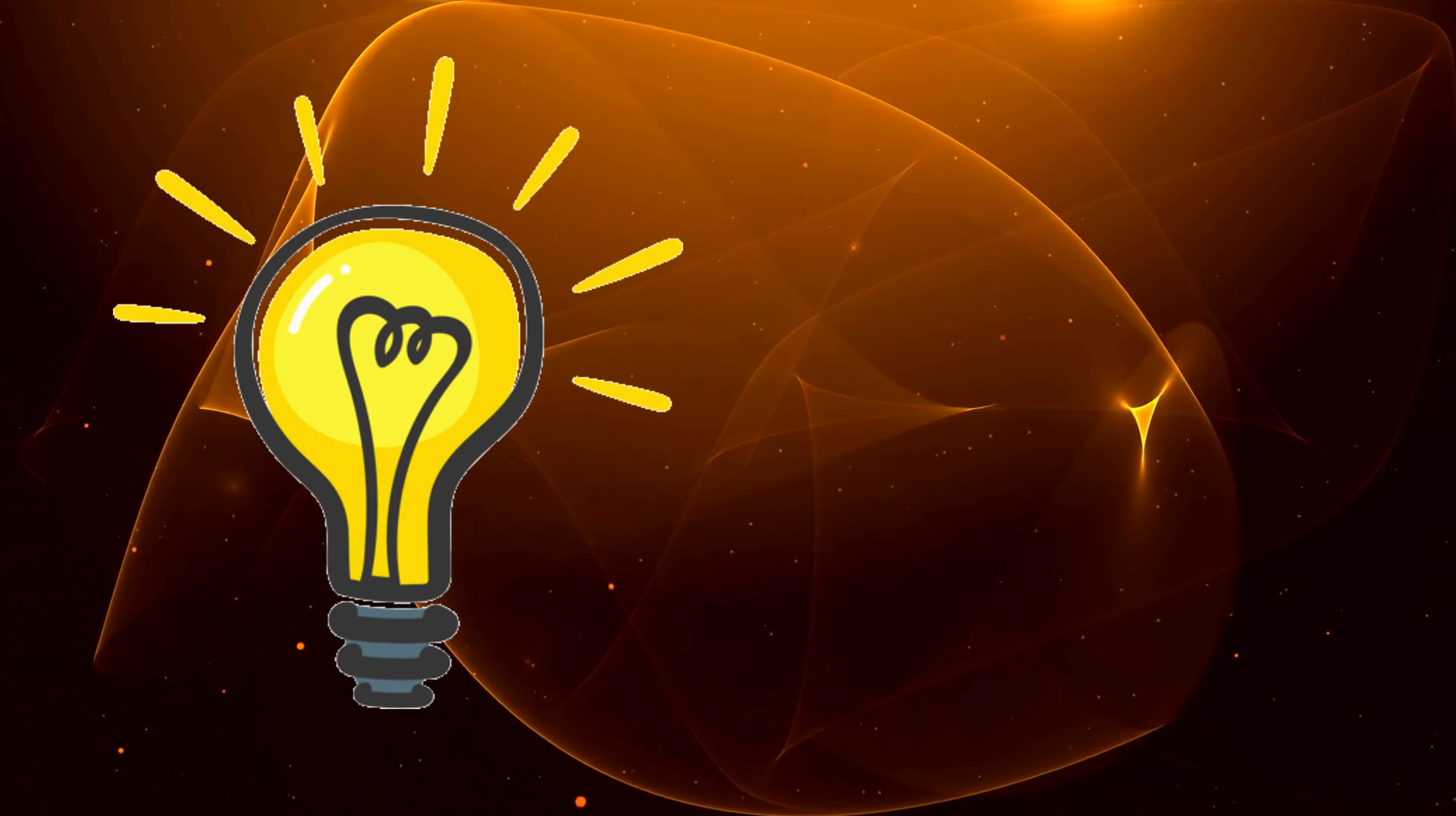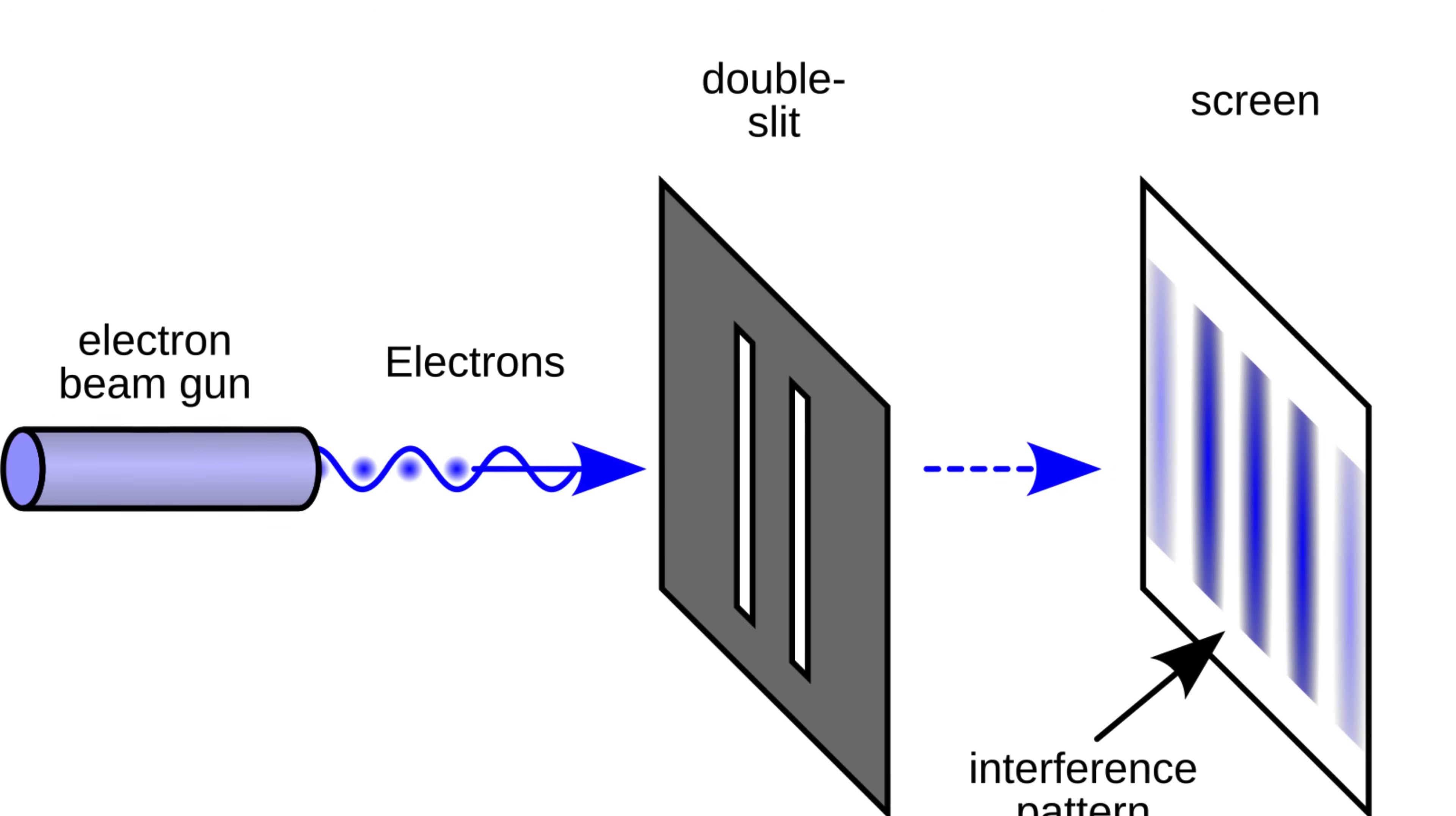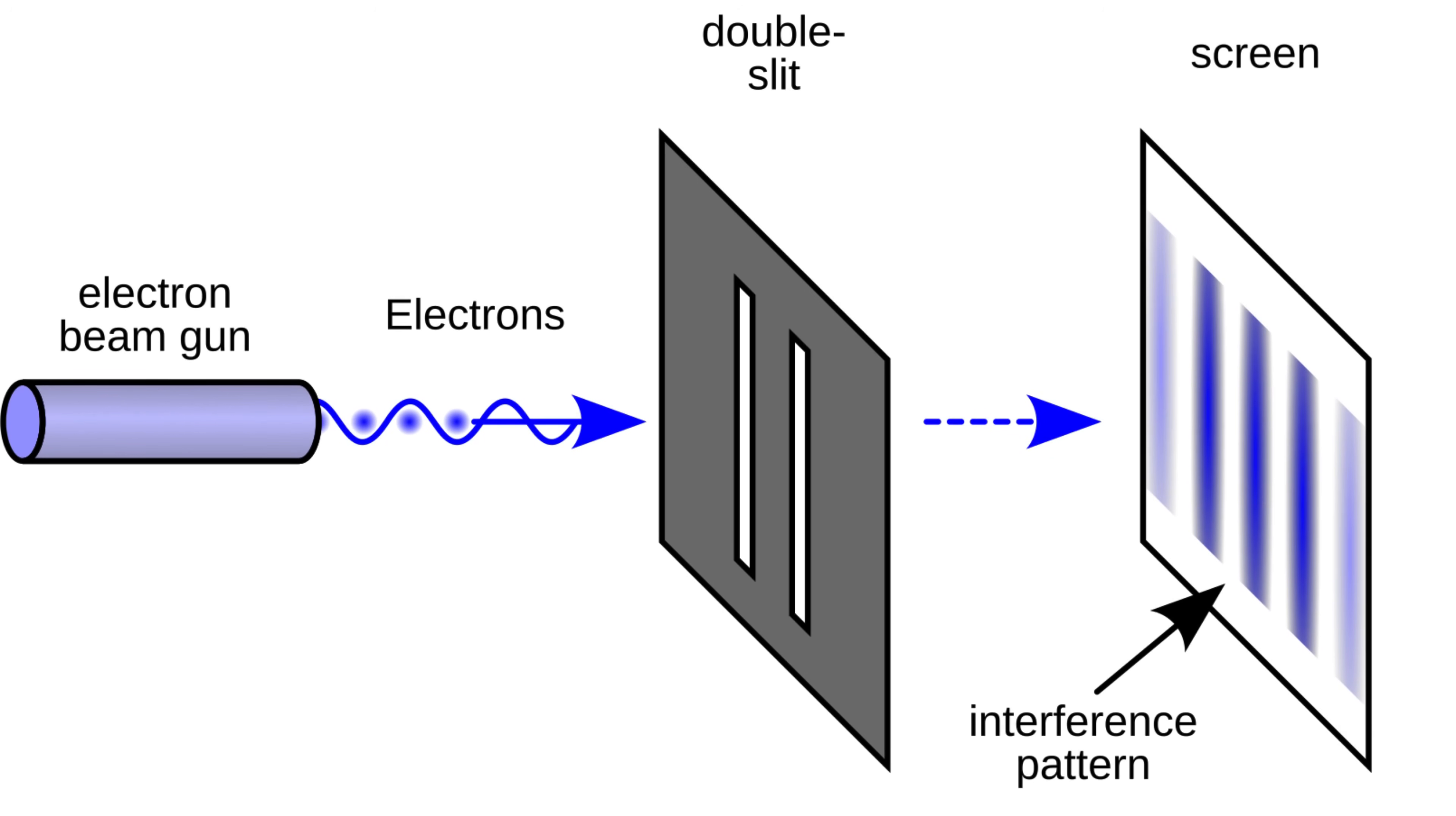But the real shock came when physicists decided to revisit Young's experiment, not with light, but with electrons. In the 20th century, scientists decided to fire individual electrons through the slits. Since electrons are particles, they expected to see two distinct spots on the screen. But when they checked the results, they found something shocking.